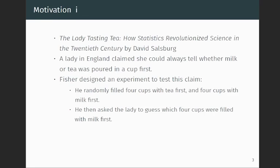So I'll start with a bit of motivation, and if you're interested in that kind of story, I encourage you to look up this book called The Lady Tasting Tea, How Statistics Revolutionized Science in the Twentieth Century by David Salsburg. But the story goes that at the time that Fisher was active in the statistical community, there was this lady in England who claimed that she could always tell whether milk or tea was poured in her cup first.